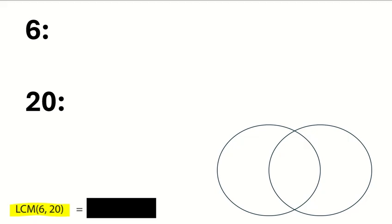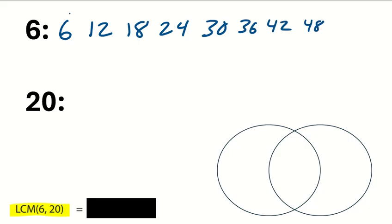And the first method we can use to find the LCM of 6 and 20 is to simply skip count by 6 and then 20. So let's do that first. So we're going to do 6, 12, 18, 24, 30, 36, 42, 48, 54, and 60.